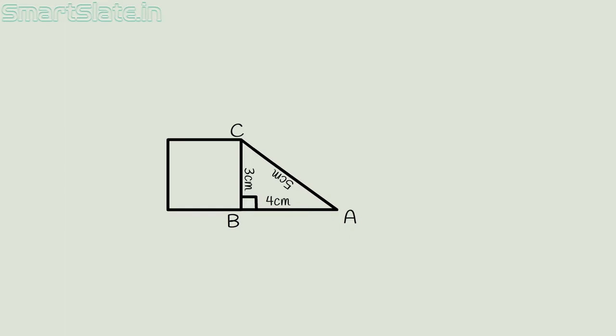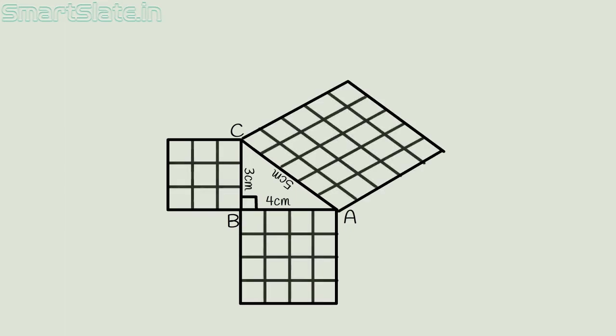Construct squares on all three sides and divide them into squares of sides 1 cm each. Now count the number of small squares on all three sides. They are 9, 16, and 25. If we add 9 and 16, we get 25.